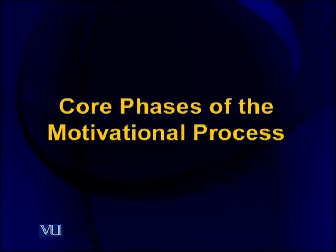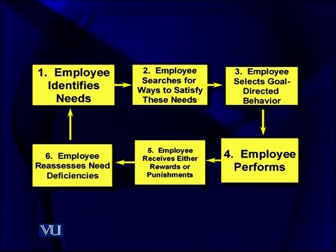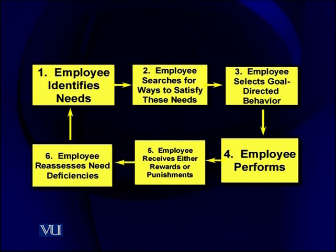Let us see the phases of the motivational process with reference to organizational work behavior. First, an employee identifies needs — when you are deprived of something, inner restlessness starts and you are directed toward certain goal achievements. So a need is felt and you search for ways to satisfy those needs, exploring alternatives — as in the previous example of needing extra money for medical bills. The third phase is selecting goal-directed behavior: this is the best option available.